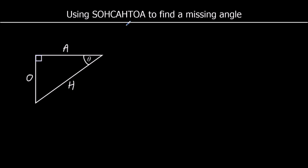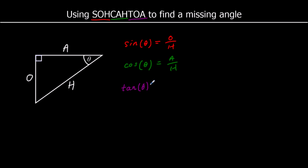We had three trigonometric ratios. SOH: sine of an angle — sin theta — is equal to O over H. Cos of an angle — cosine of an angle — is equal to A over H. And TOA means tan of the angle is equal to O over A. In this video, we're going to be given two sides — the ratio — and we're going to use that to work out a missing angle.